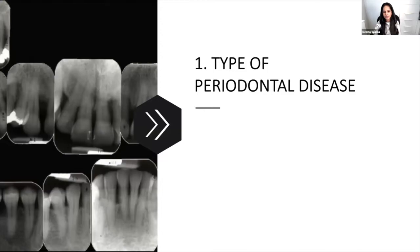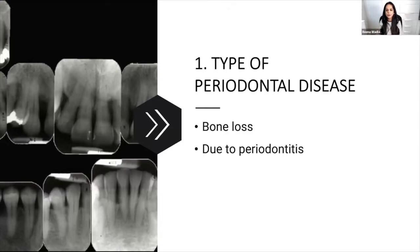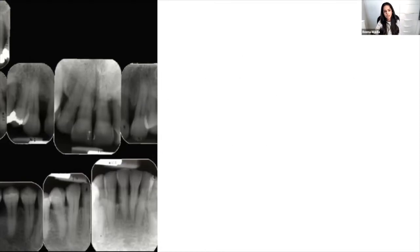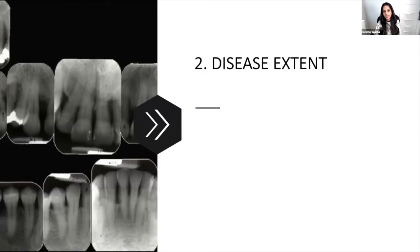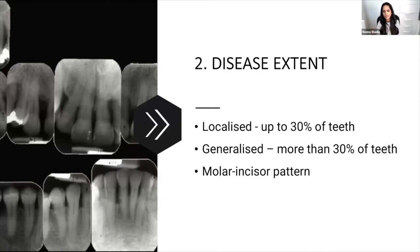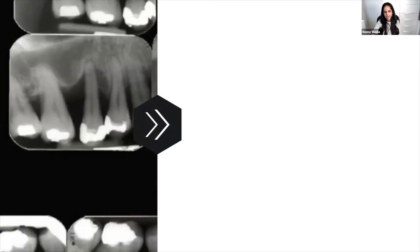Step one: is this periodontitis? Look at whether there is bone loss and whether it's due to perio — bone loss can occur from crown lengthening or removing an impacted third molar. Step two: what is the disease extent? Is it localized, generalized, or molar-incisor pattern? You only look at bone loss here. More than 30% of teeth affected means it's generalized. So far you now have 'generalized periodontitis.'